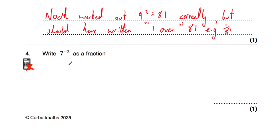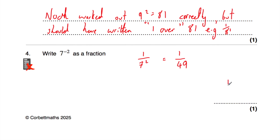Question 4 says: write 7 to the power of negative 2 as a fraction. Because it has a negative power, we do 1 over the positive power — 1 over 7 squared. 7 squared is 49, so the answer is 1 over 49.